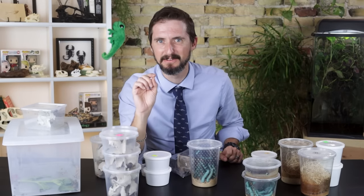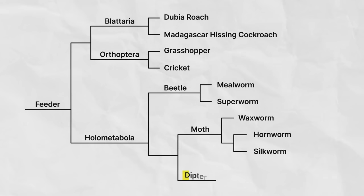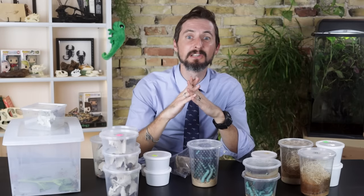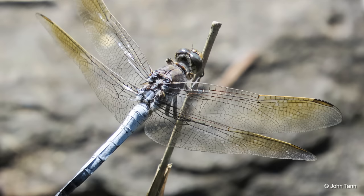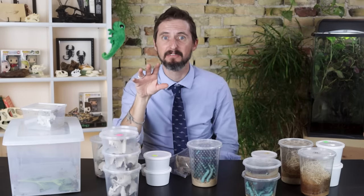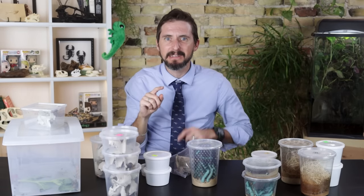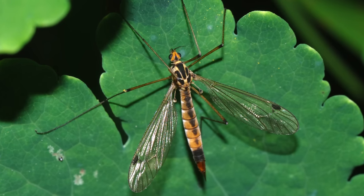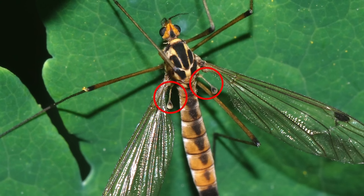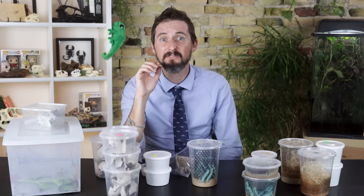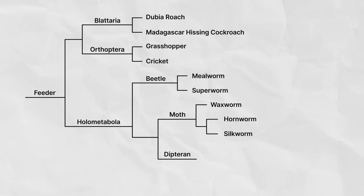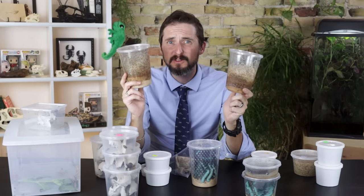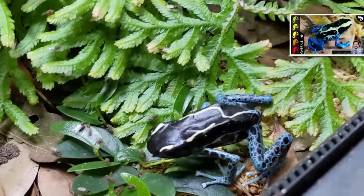That brings us to the last clade of feeder insects we're going to discuss today: the Diptera — flies. I've heard Diptera refers to the fact that they have two wings, whereas most insects have four. They do actually have four wings, but the second set are modified into little whirling gyros called halteres, so only two generate lift. There are a few different flies common as feeders, including the Drosophila fruit flies and black soldier fly larvae.